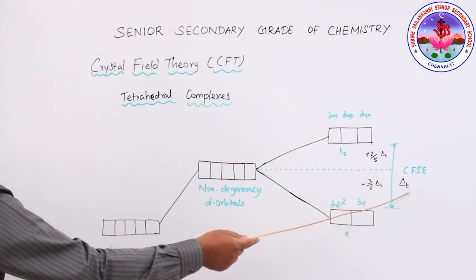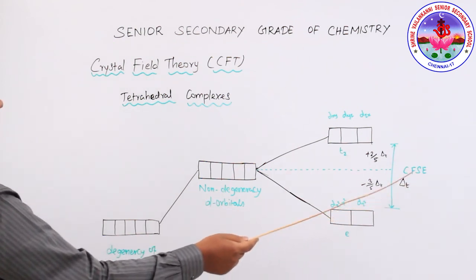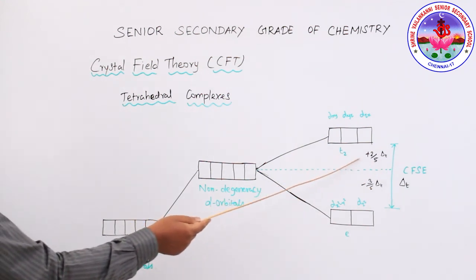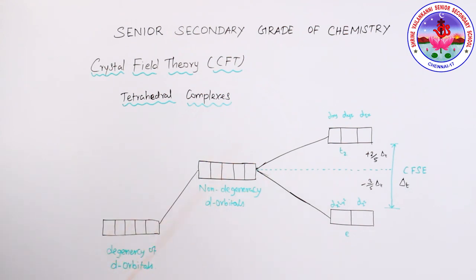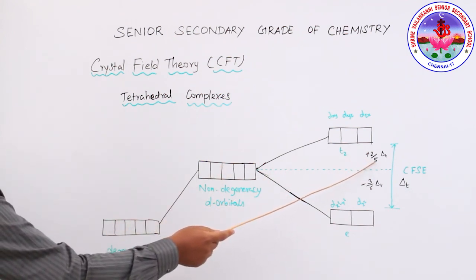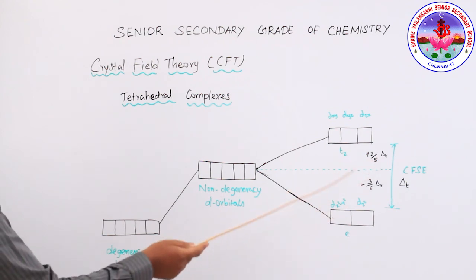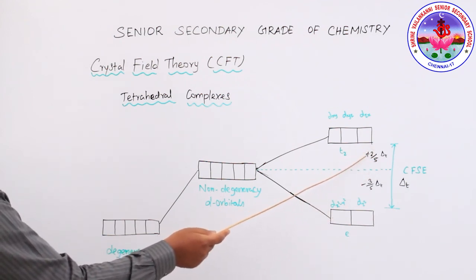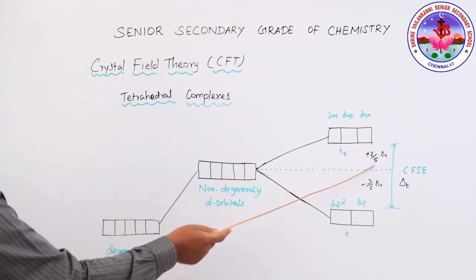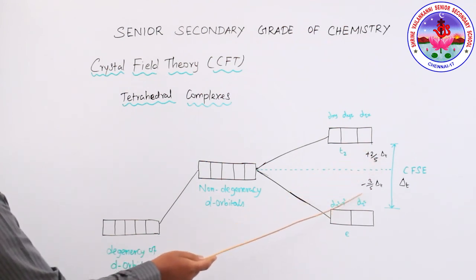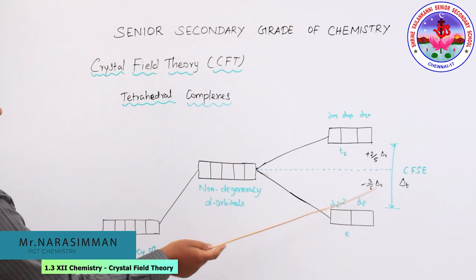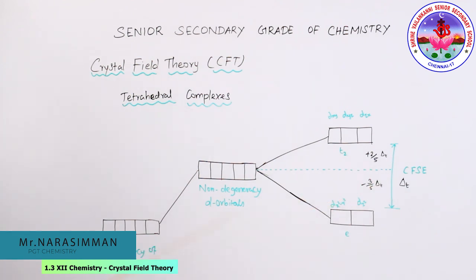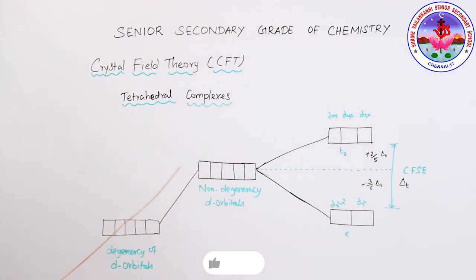For tetrahedral complexes, the energy value is +2/5 ΔT for the T2 orbitals (energy rises among the 3 orbitals) and −3/5 ΔT for the E orbitals (energy is lowered, 2 orbitals). This completes the tetrahedral complexes. Now we will see the limitations of crystal field theory.